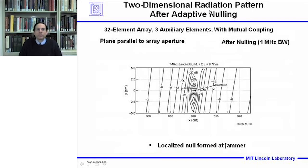This slide shows the two-dimensional radiation pattern after adaptive nulling at a range distance of two aperture diameters. After nulling an interference source with the 32-element array and three auxiliary elements including array mutual coupling effects, if we sample the near field radiation pattern on an XY plane parallel to the array, we do see a two-dimensional null formed at the position of the interferer.